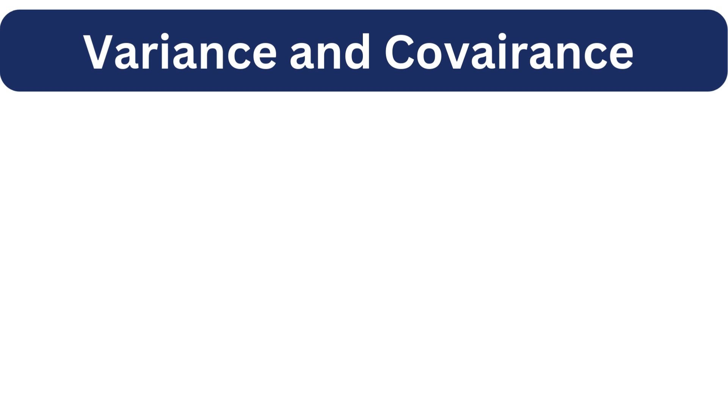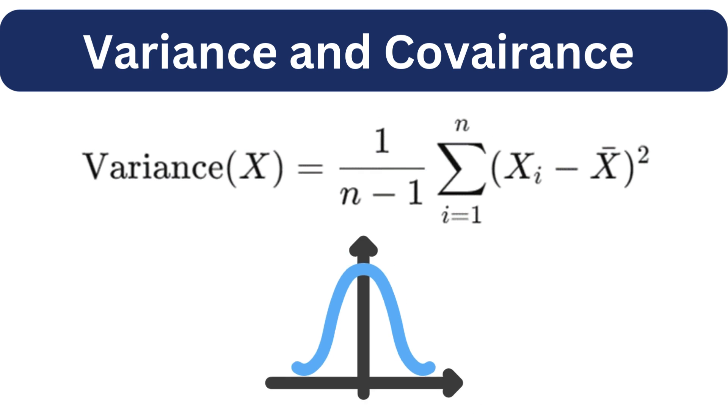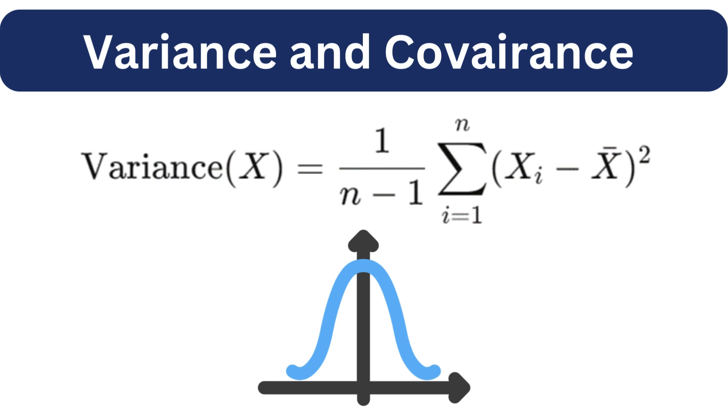Before diving into the R coefficient, let's quickly recap variance and covariance. Variance measures the dispersion of data points from their mean, giving us insights into how spread out the data is.